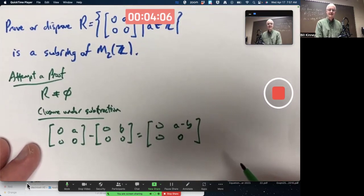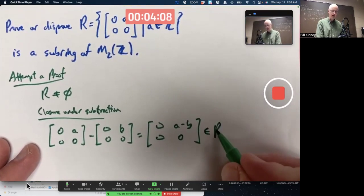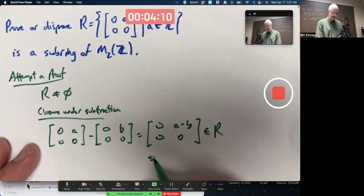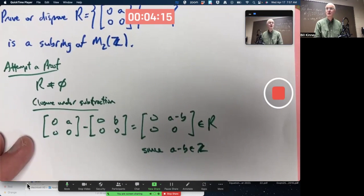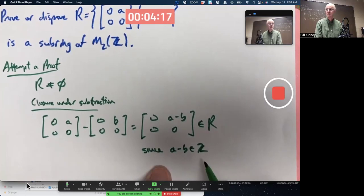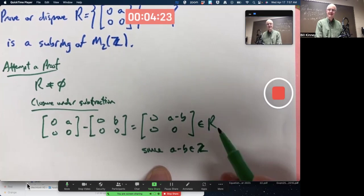is to say, yes, this is an element of R since A minus B is an element of Z. If you had to give a reason, you should add that extra little piece. Maybe you didn't do that. For full credit, you should really emphasize you know this is an element of R,